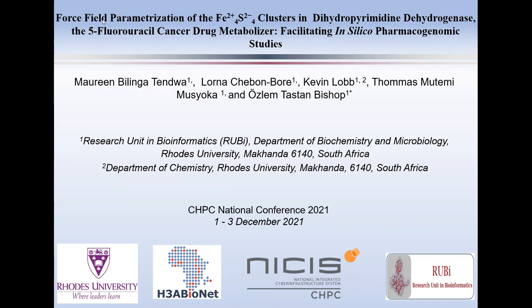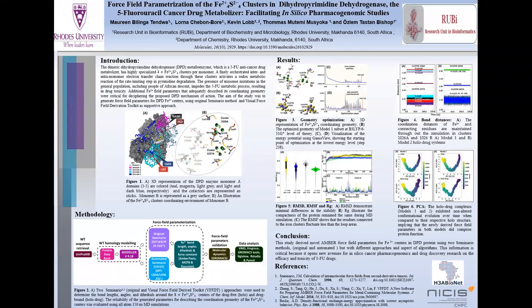Our investigation was based on generating new phosphate parameters for ion centers in the dihydropyrimidine dehydrogenase protein. DPD protein is a protein that metabolizes 5-FU, which is 5-fluorouracil cancer drug, the third most commonly prescribed gastrointestinal cancer drug.